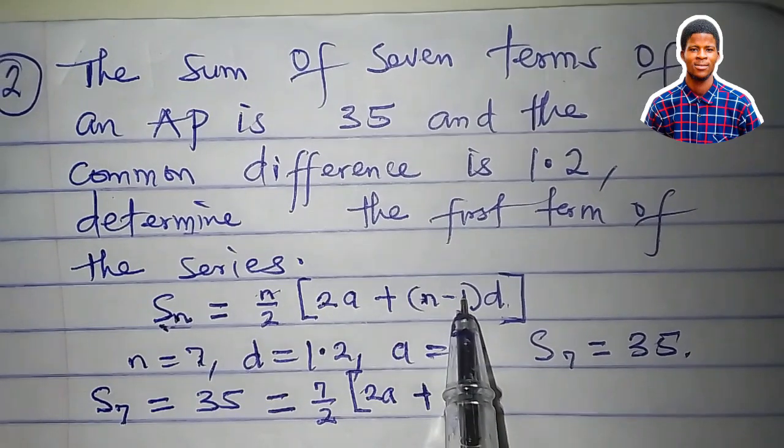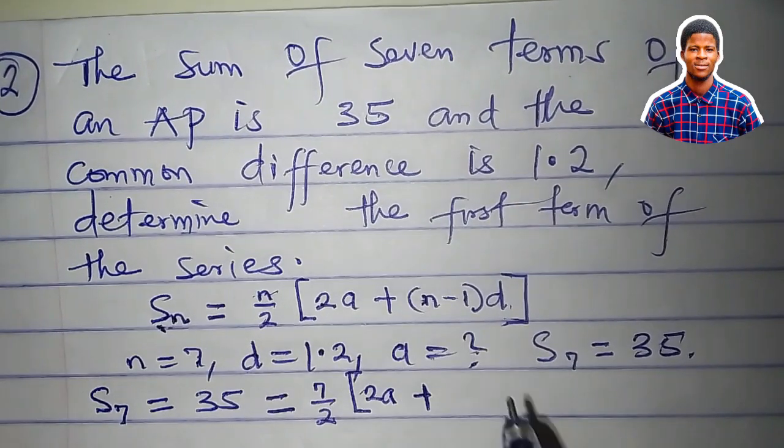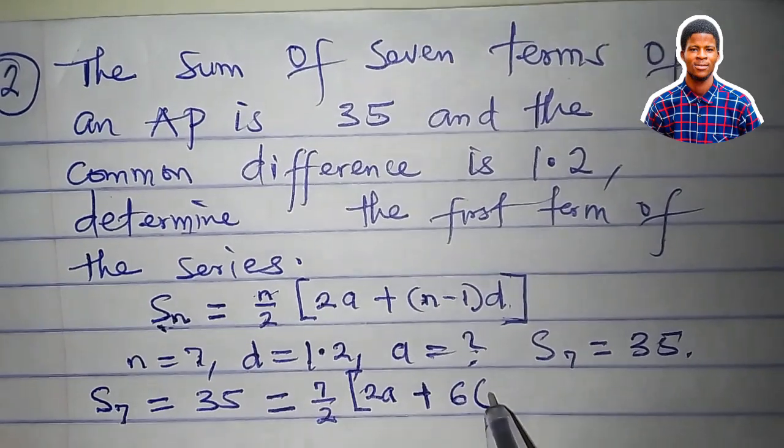a is what we are looking for. So 2a plus n is 7, 7 minus 1 is 6. That would be 6 times the common difference, 1.2.